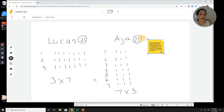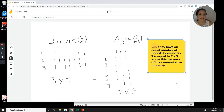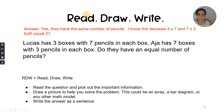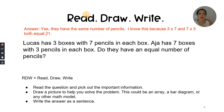So now I've read, I've drawn, and I've written a complete answer. Let's go back to the presentation and see if my answer is correct. Answer: yes, they have the same number of pencils. I know this because three times seven and seven times three both equal 21. Remember, you might have more or less information in your answer — as long as you answer the question in a complete sentence, you should be on the right track. But if you want to go above and beyond, you would want to explain why you came to your answer.